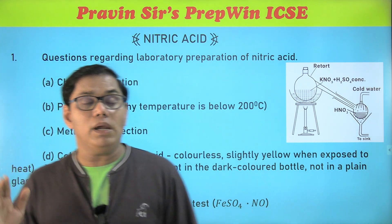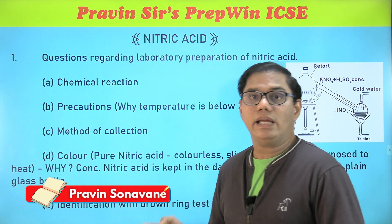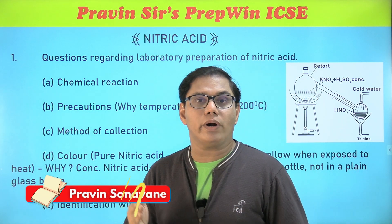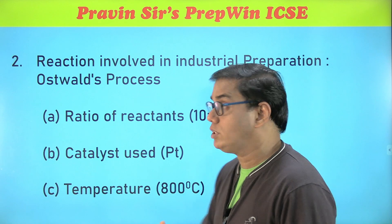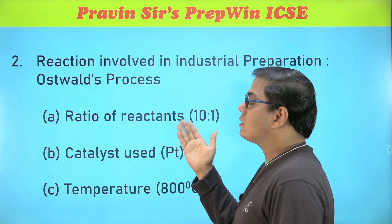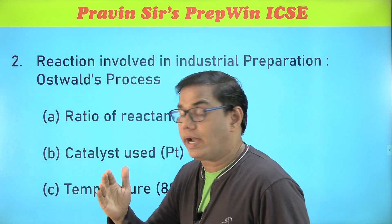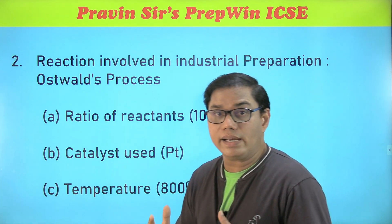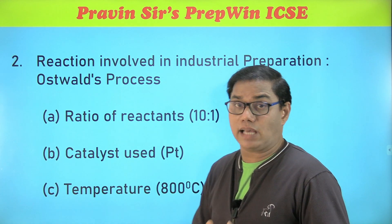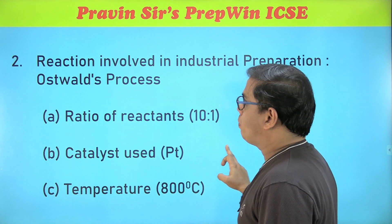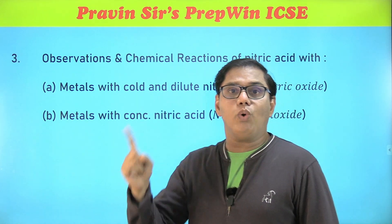The next important question is regarding the large-scale production of nitric acid — the industrial preparation. The name of the process is Ostwald's process. When the reactants react, you need to know: the ratio of the reactants, the catalyst used, and the temperature — these three conditions are very very important. That was prediction number two. In prediction number three, you will get one of two reactions in your examination.